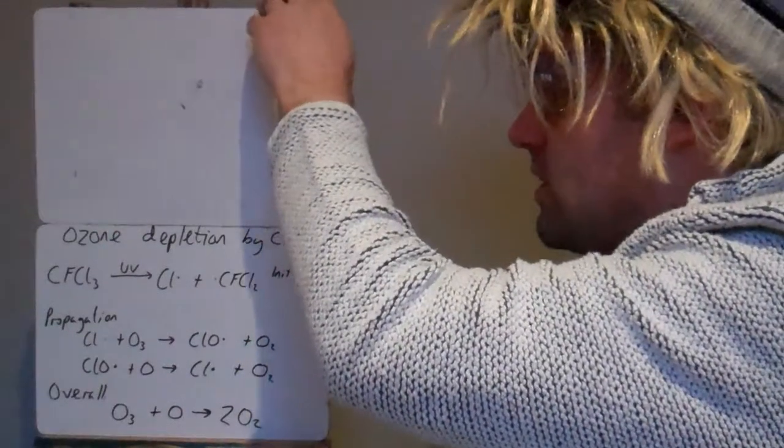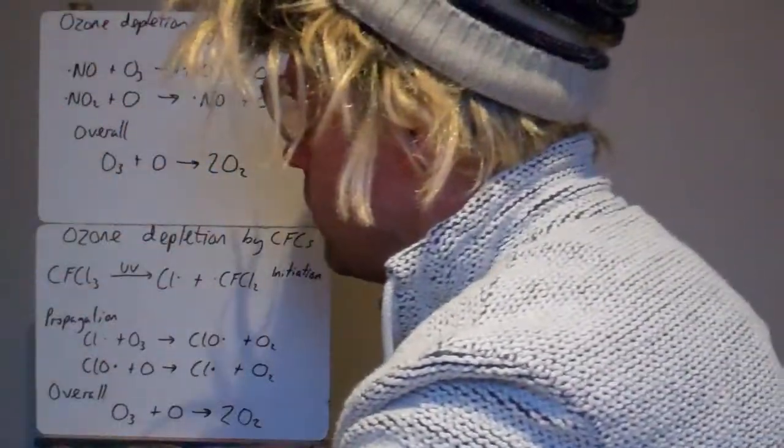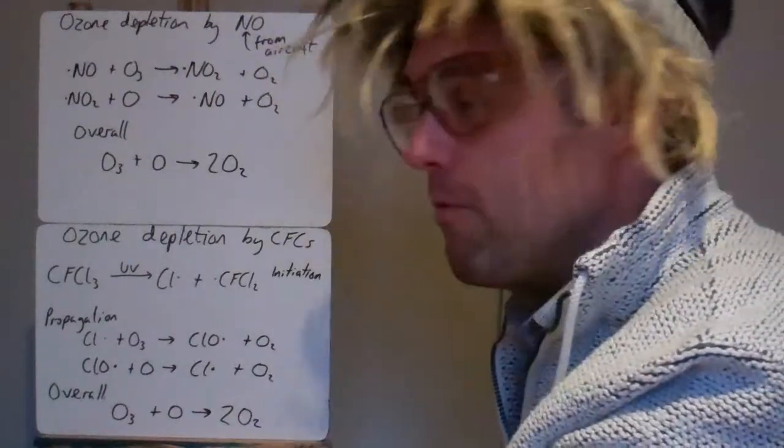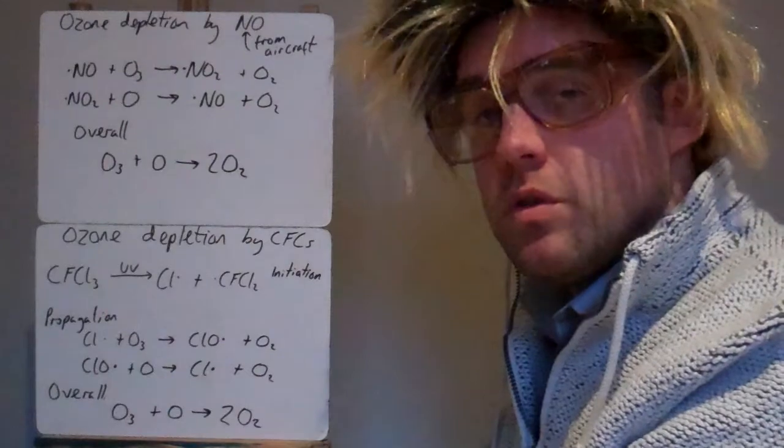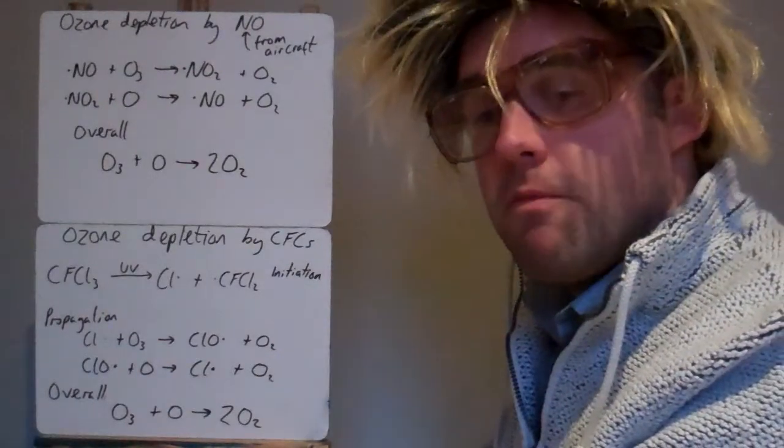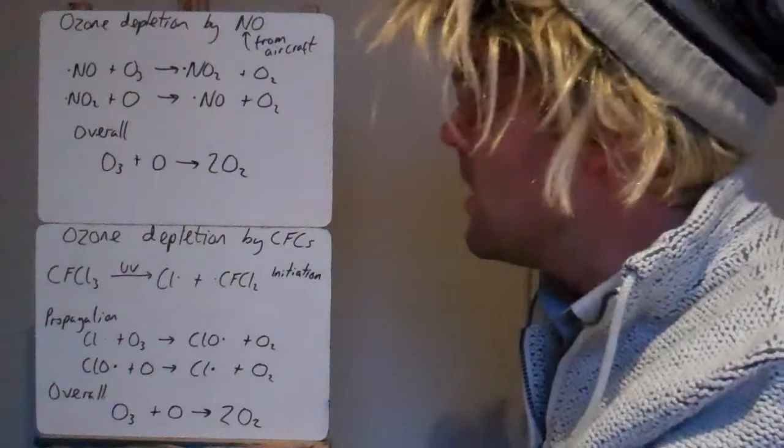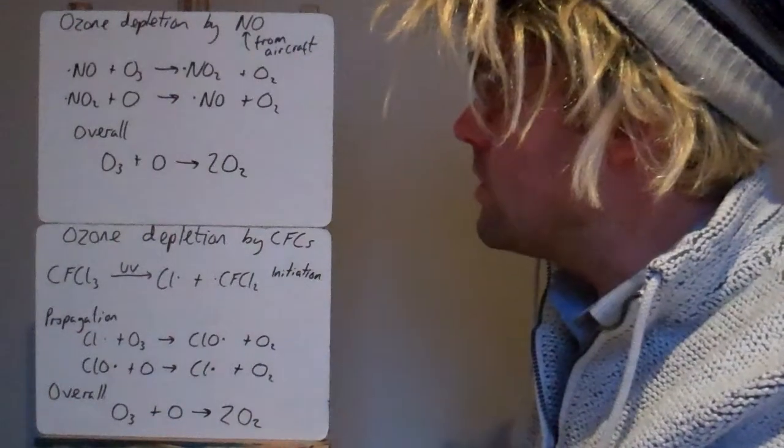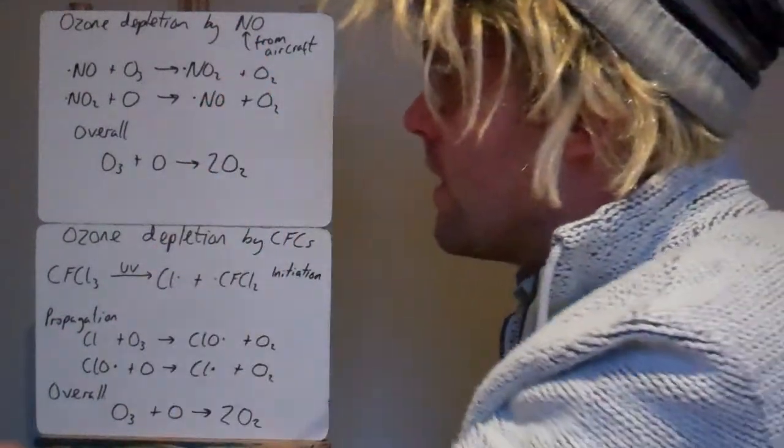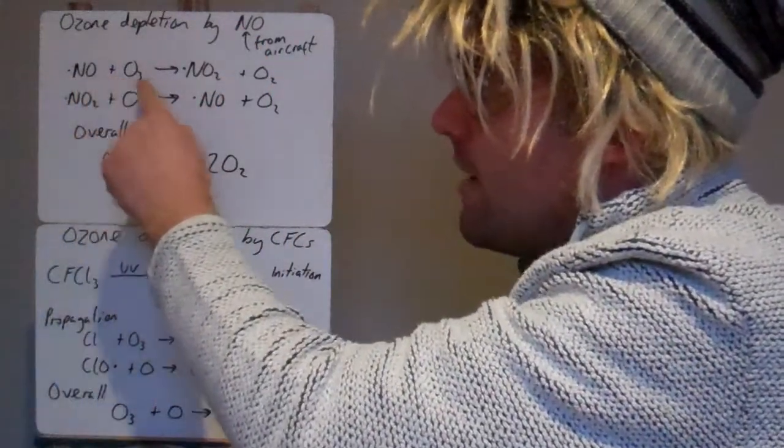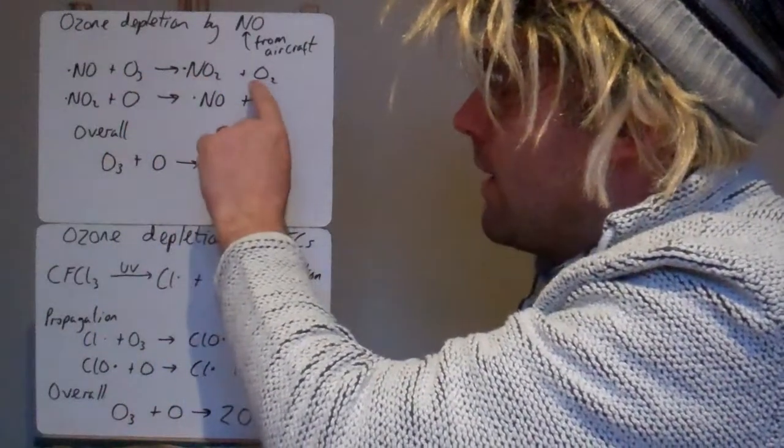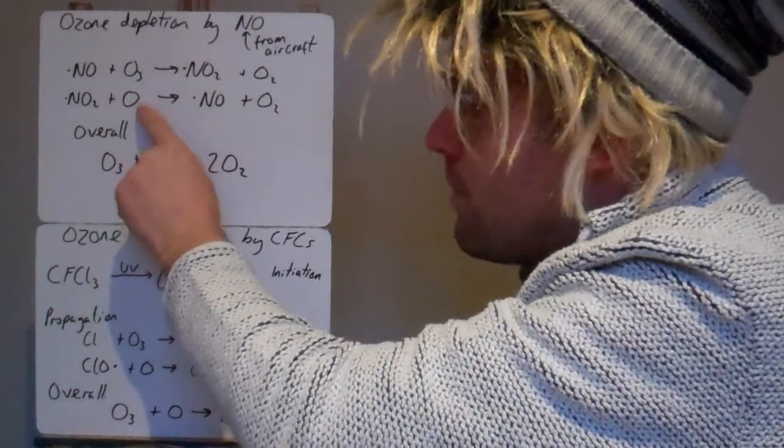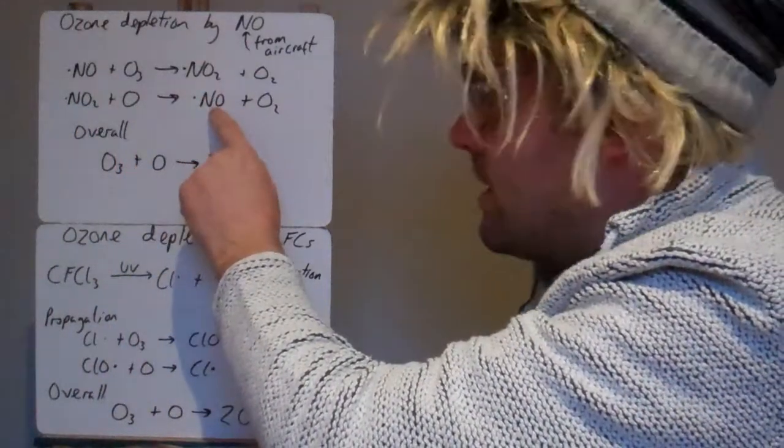It's not just CFCs that do this though. It can also occur by nitrogen oxides. Where do the nitrogen oxides come from? One area is from aircraft, from the exhaust of aircraft. They can also come from lightning, thunderstorms. So basically under extreme conditions, nitrogen and oxygen can react together to make nitrogen oxides. So here's an example, NO. This nitrogen oxide is a free radical. It reacts with the ozone to make NO2 and a molecule of O2. And then the NO2 reacts with the oxygen atom to make NO. So it's regenerated again and O2.